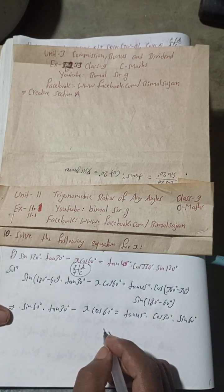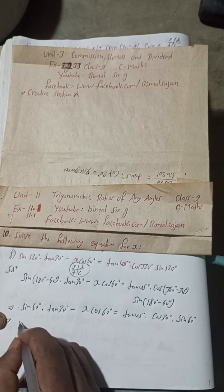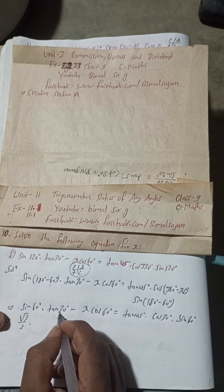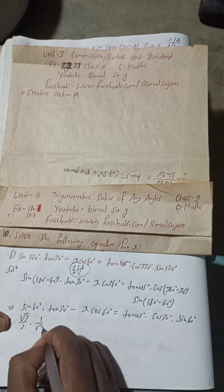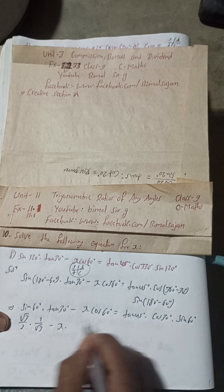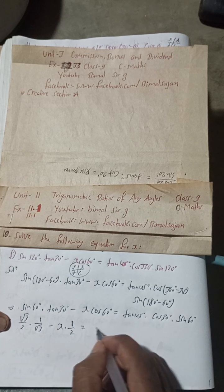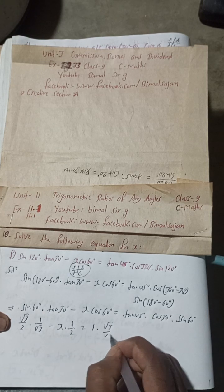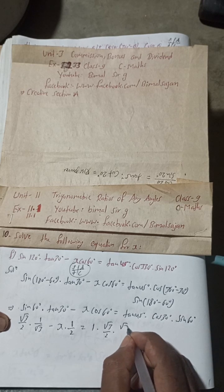Sin 180 minus 60 means sin 60 degree, and it is second quadrant. Second quadrant sin is positive, so it is okay. Now here put the value. Sin 60 value is root 3 by 2, into tan 30 value is 1 by root 3, minus x cos 60 is 1 by 2, is equal to tan 45 is 1, cos 30 is root 3 by 2, sin 60 is root 3 by 2.